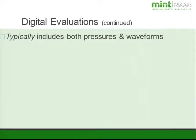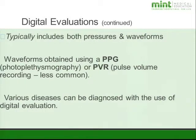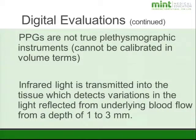When assessing the digits, we typically obtain both pressures and waveforms, just like we do with the extremities. Generally we use a PPG sensor for this. There are some PVR sensors for digital evaluations, but most places use photoplethysmography. Various diseases can be diagnosed with a digital evaluation. PPGs are not true plethysmographic instruments, which means they cannot be calibrated in volume terms.